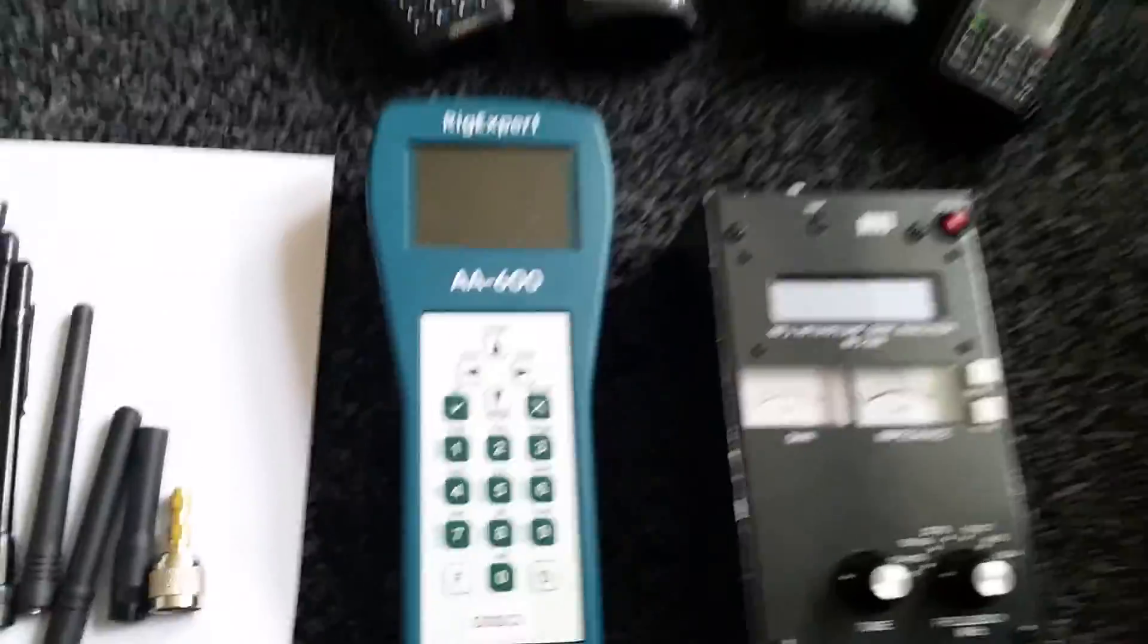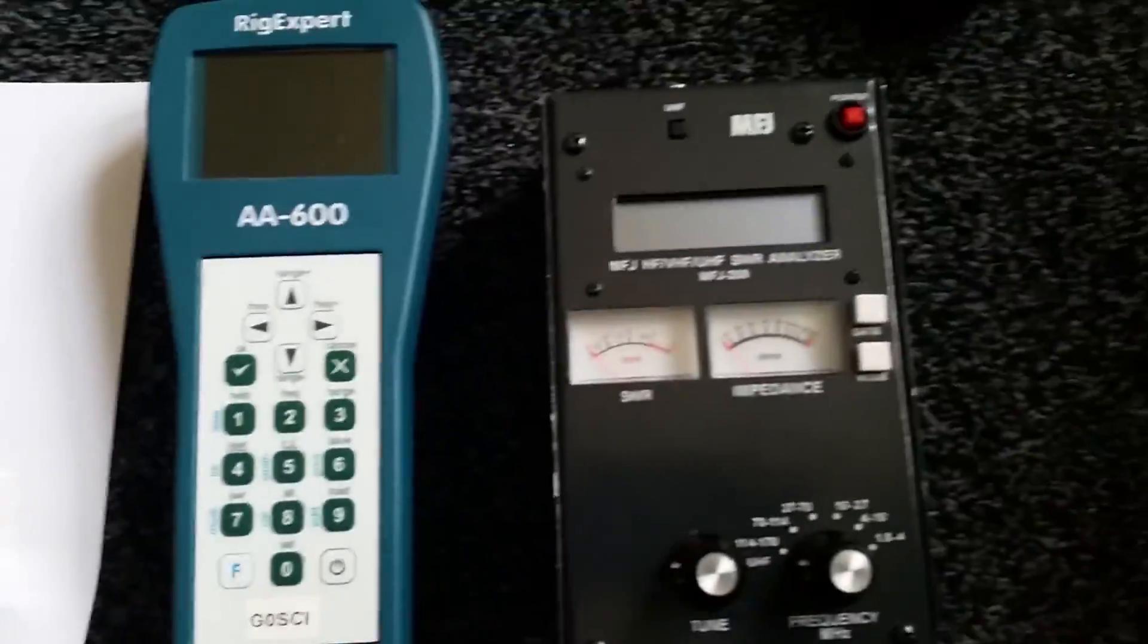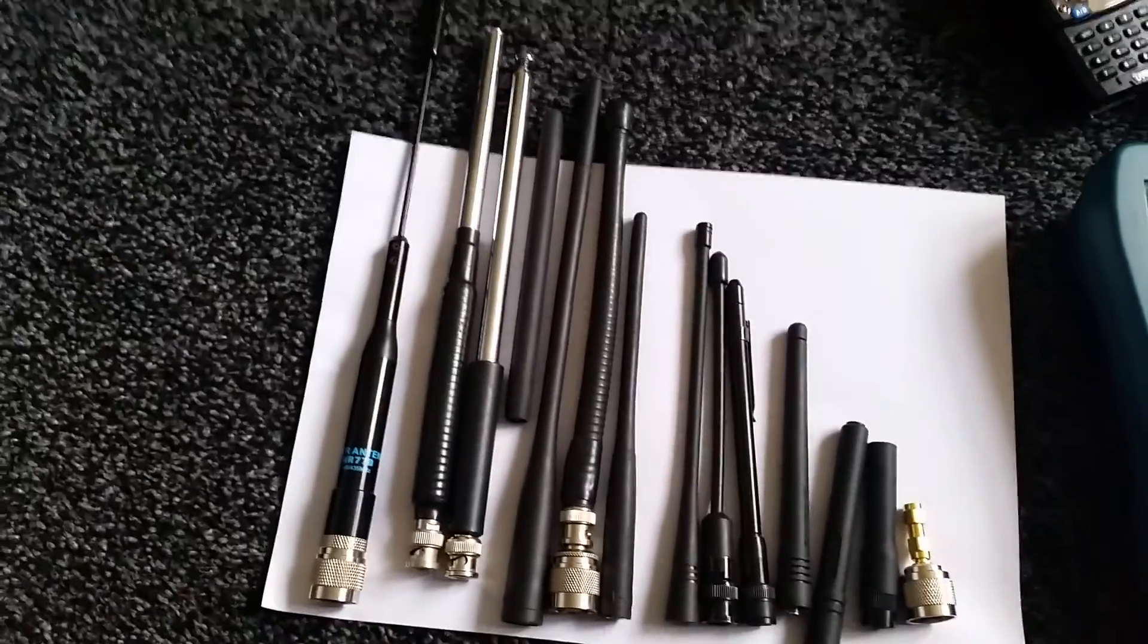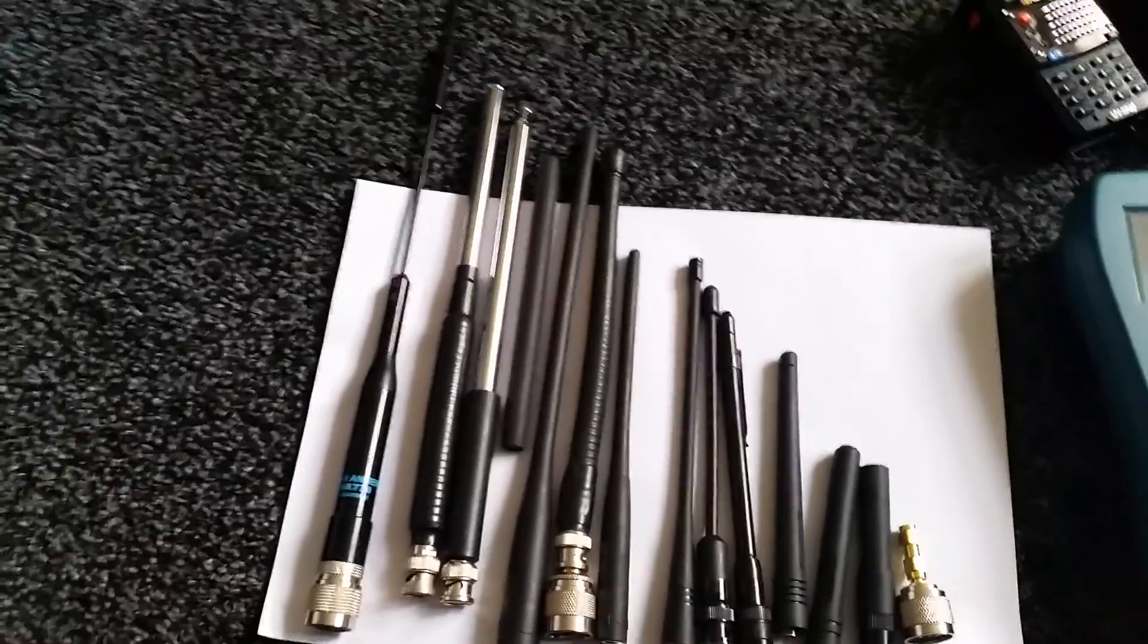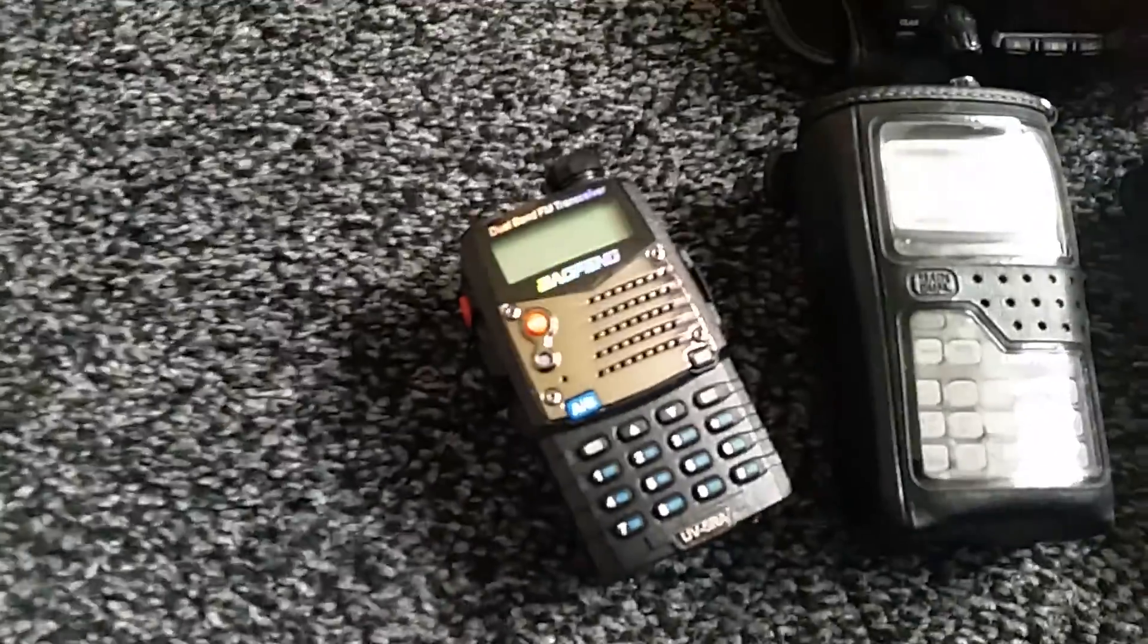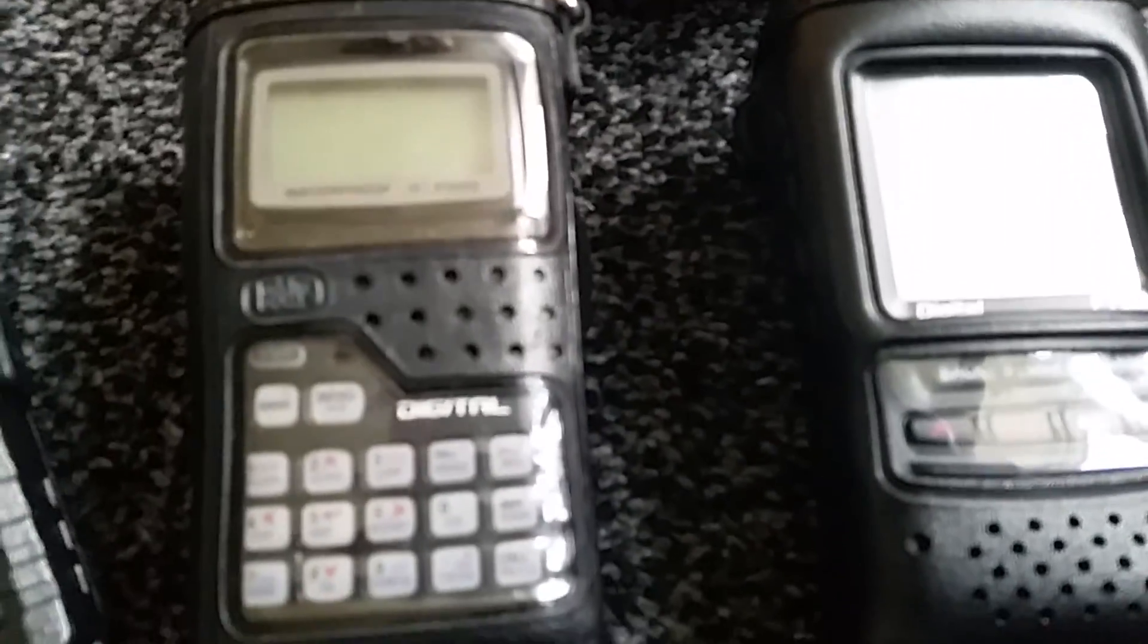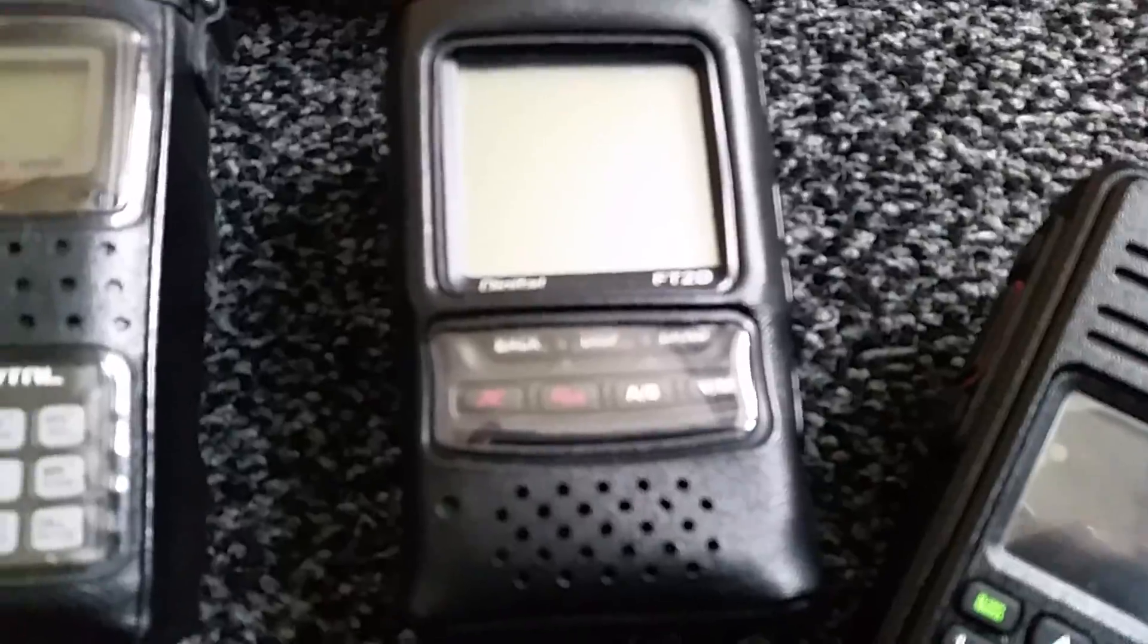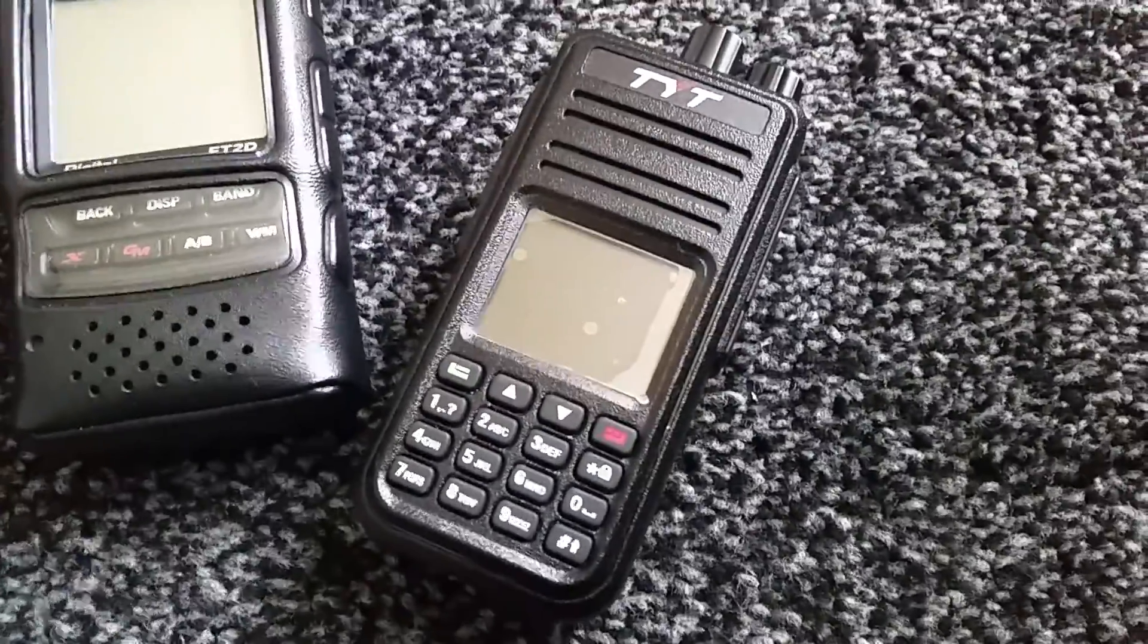Here we've got the Rig Expert and the MFG Analyzer, and a range of antennas including a mobile antenna which is an NR77B, a BFN, the 92D, the FT2D, and the TYT-DMR.